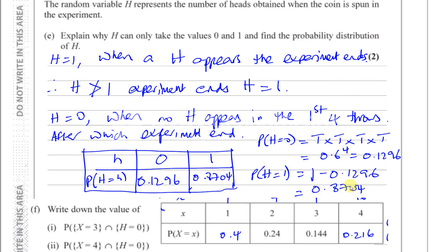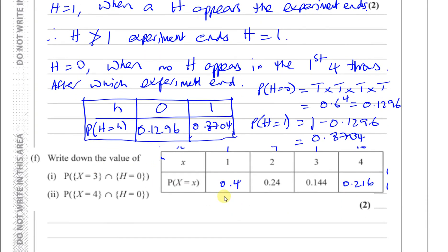I just want to explain something to give a deeper understanding. The answer that H equals 1 is basically a combination of outcomes: getting a head on the first throw, plus getting a head on the second throw, plus getting a head on the third throw, plus getting a head on the fourth throw.